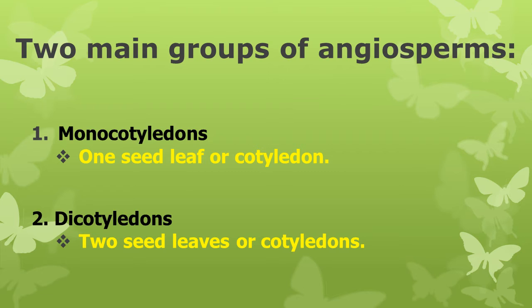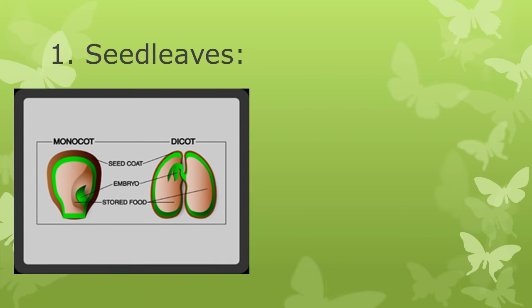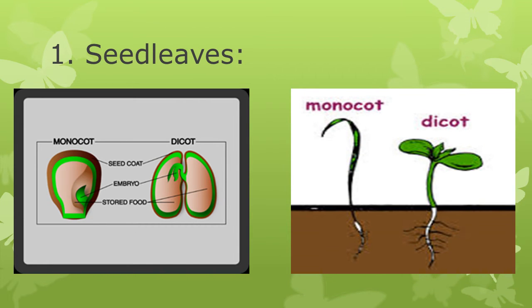There are five characteristics used to differentiate Monocotyledons from Dicotyledons. First: Seed Leaves. If the embryo within the seed has only one seed leaf, then it is a Monocotyledon plant. This can also be observed when the seeds germinate — if it germinates with only one new leaf, then it is a Monocotyledon seed.